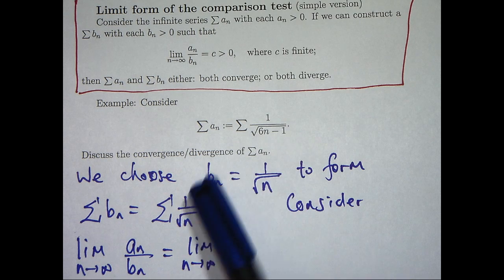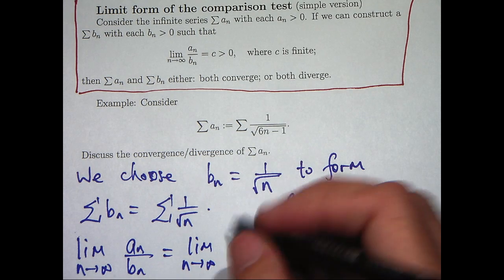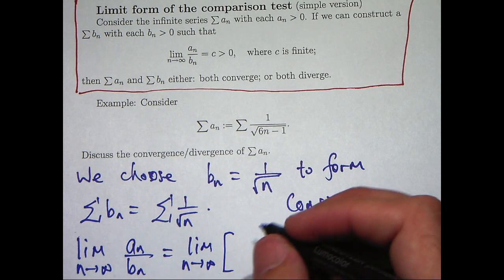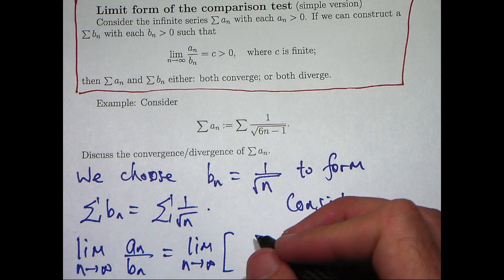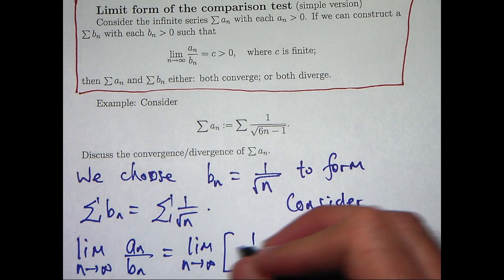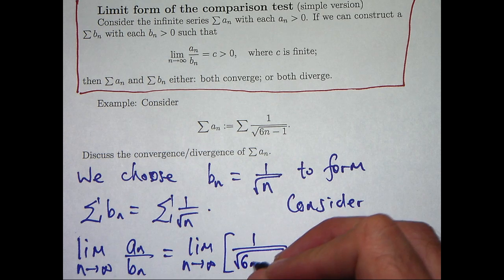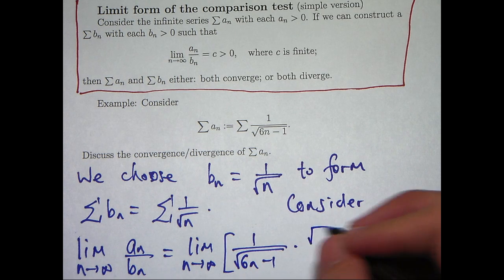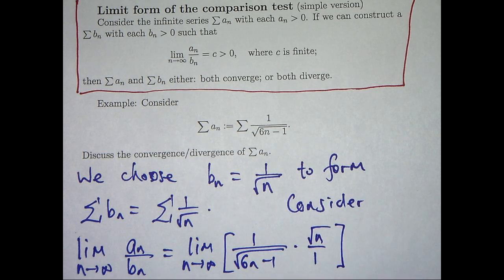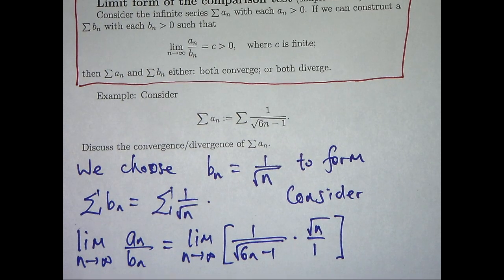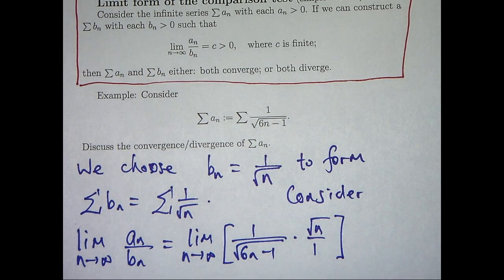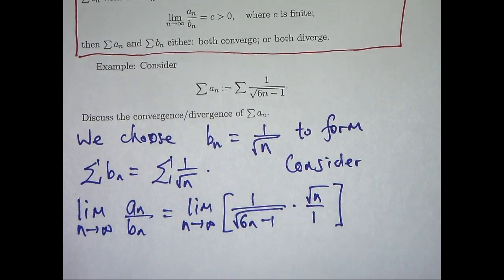Alright, so our a sub n is this, our b sub n is this. So, I'm going to multiply by the reciprocal and I'm going to come up with the following. So let's put this together and see if we can take our limit.